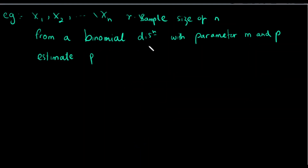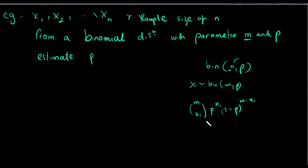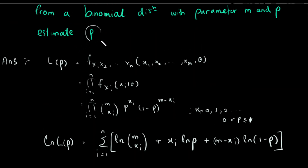For example, we need to consider the binomial distribution. We need to consider the parameter n and p. We need to consider the binomial distribution and the size. We need to consider the parameter n and p.